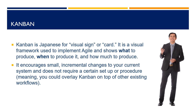Kanban is Japanese for visual sign or card. It is a visual framework used to implement Agile and shows what to produce, when to produce it, and how much to produce. It encourages small, incremental changes to your current system and does not require a certain setup or procedure, meaning you could overlay Kanban on top of other existing workflows.